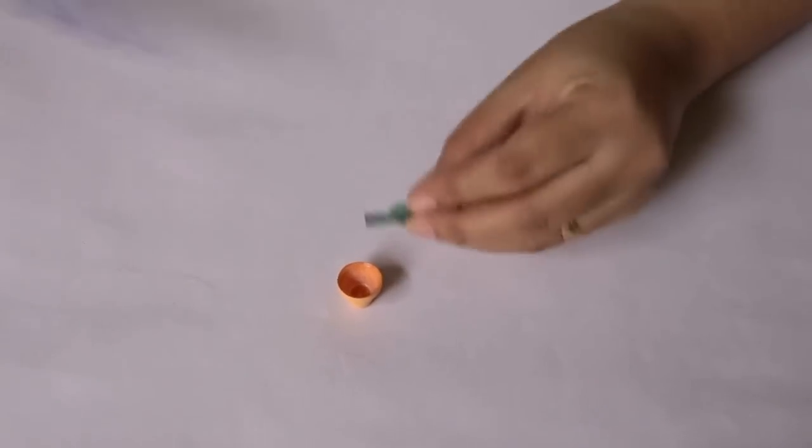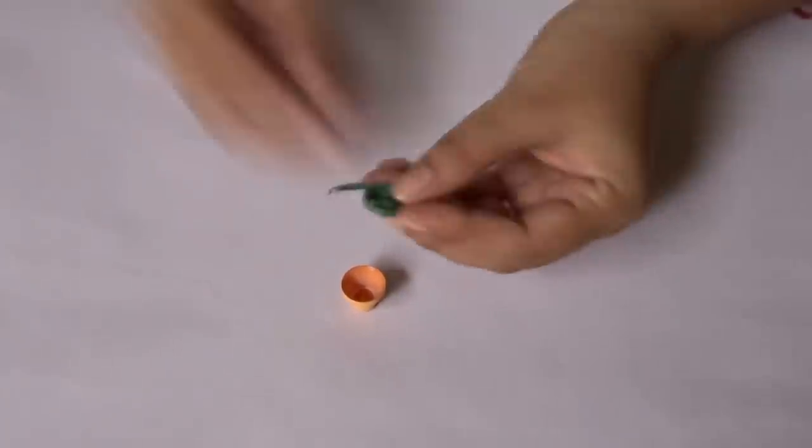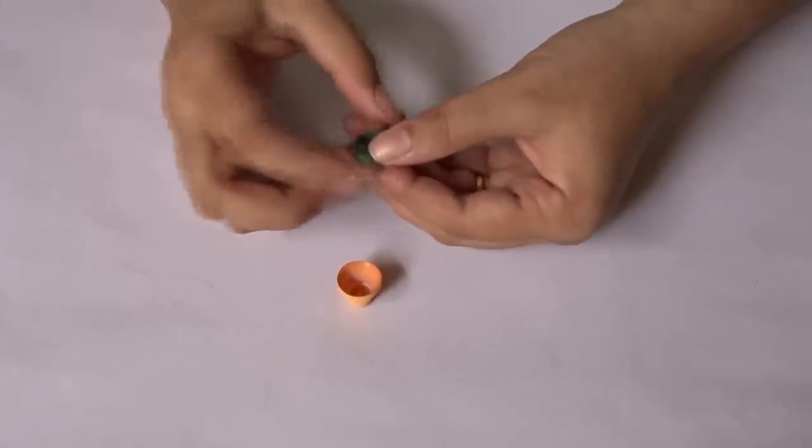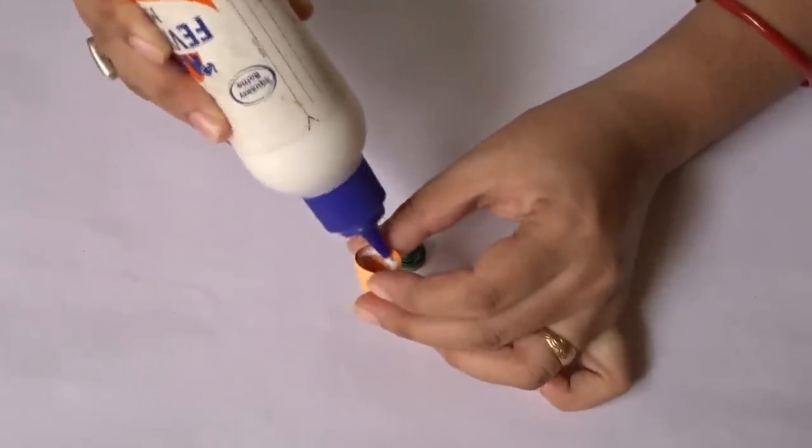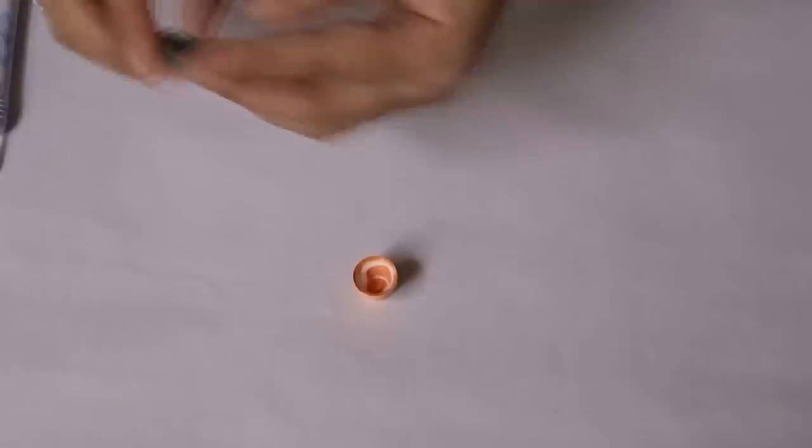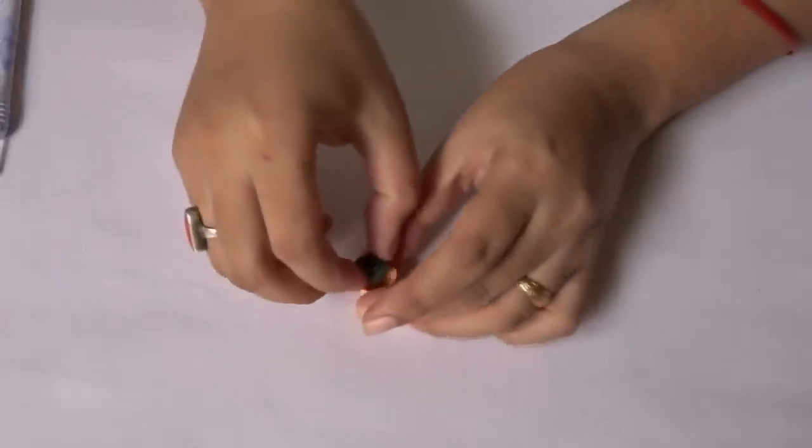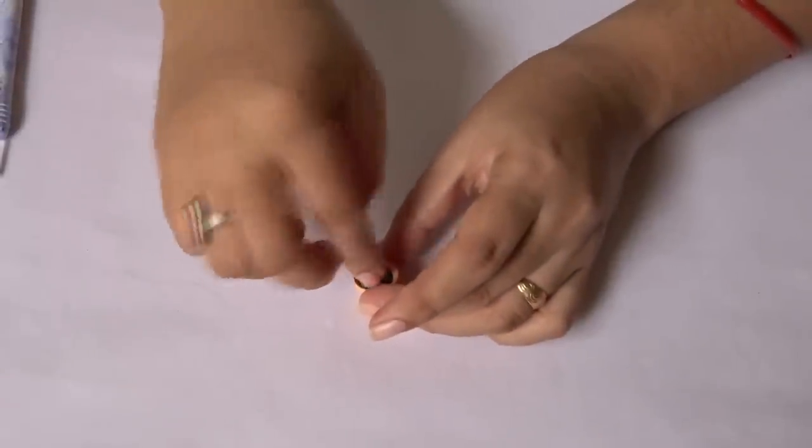Now apply some glue to secure it. Also apply some glue inside the pot and place the green quill on it. Now keep it aside.